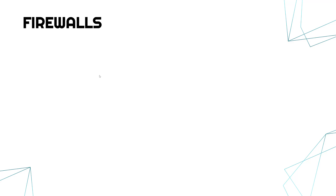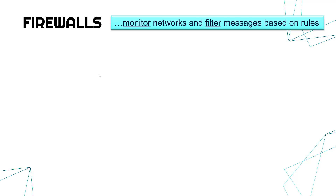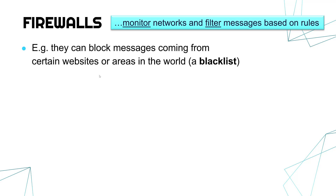A second logical measure, which often gets mixed up with anti-malware, is a firewall. A firewall is much more about the network — it monitors networks and filters messages based on rules. It won't necessarily detect malware coming into your computer. Anti-malware itself is on the computer, whereas a firewall sits on the network between your computer and somebody else's computer. For example, you might use a firewall to block messages coming from certain websites or areas in the world. It has a blacklist where you put down a list of IP addresses you want to ban from accessing your network — it's not necessarily blocking malware unless it's a very advanced firewall; it's just a set of rules blocking messages based on those rules.